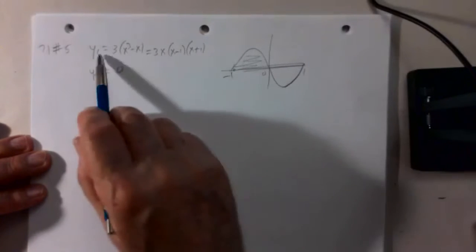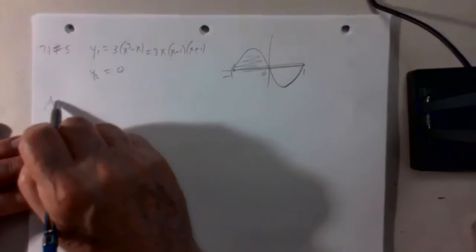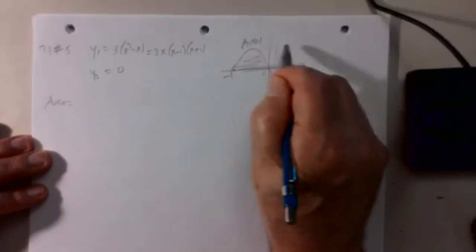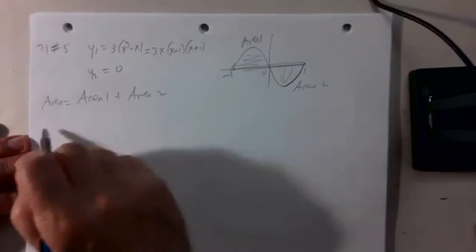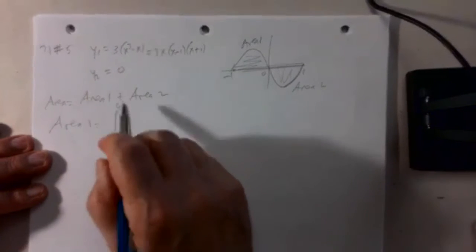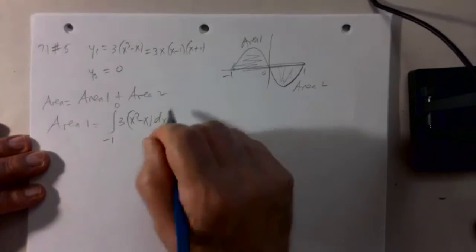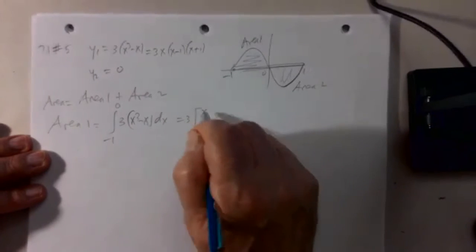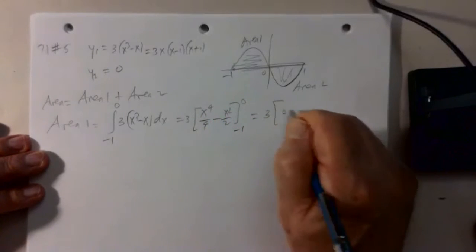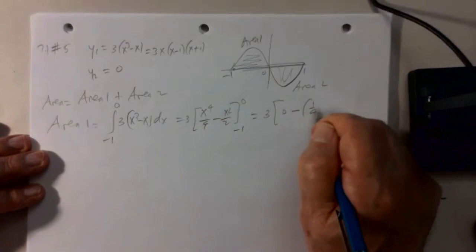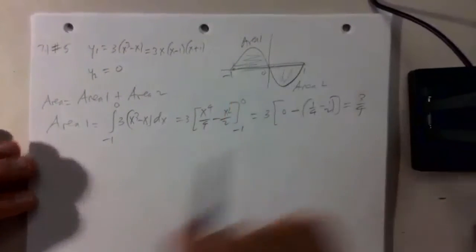So in this region, the cubic is above the x-axis. In this region, the x-axis is above the cubic. So the area, let's call this area 1 and this area 2. So it's area 1 plus area 2. Area 1 is the integral from minus 1 to 0 of 3 x cubed minus x dx, which is 3 times x to the 4th over 4 minus x squared over 2 from minus 1 to 0. When x is 0, it's 0. And when x is negative 1, it's 1 fourth minus 1 half, which is minus 1 fourth. So this first area is 3 fourths.